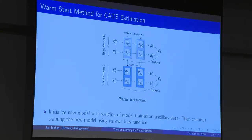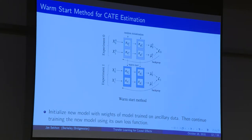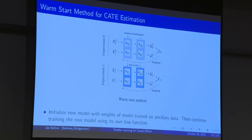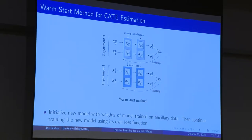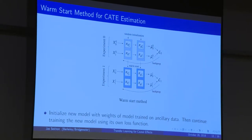We have two experiments — experiment zero and experiment one — with X covariates for treatment and control, set up with two conceptual layers. For experiment zero, you run it and try to estimate in these two layers, needing to output your estimates of potential outcome under control — mu sub zero — and potential outcomes under treatment — mu sub one. The subscripts denote the potential outcomes; the superscripts denote experiment zero. You have a loss function, mean squared error, and you run that network.